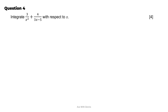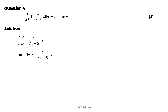Question 4. Integrate (3 over x squared) plus (4 over 3x minus 5) with respect to x. First, change 3 over x squared to 3x to the power of negative 2 (indices form). For 4 over (3x minus 5), we keep it as is — if we used indices form the power would be negative 1, and integrating that would give power 0, which doesn't apply here.